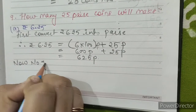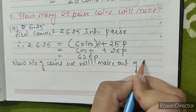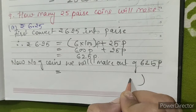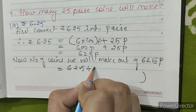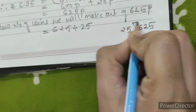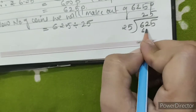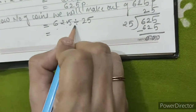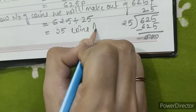Now, the number of coins we will make out of 625 paise equals 625 divided by 25. 25 into 25 gives us 625. 625 minus 625 is 0. So 625 divided by 25, we get 25 coins. This is our answer.